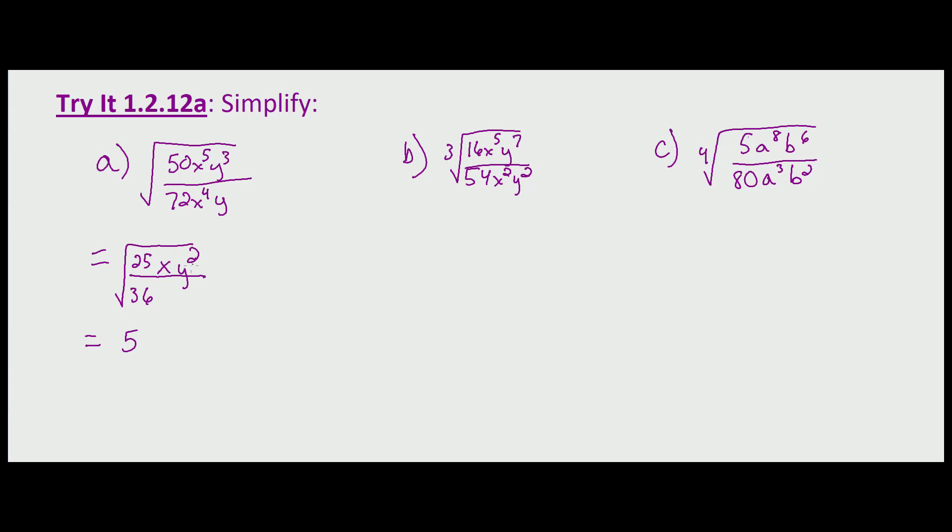The square root of 25 is 5, the square root of x is x, but we'll look at the y first since we're taking it out. The square root of y squared, we have to take the absolute value because the power we're left with is an odd power. So that's 5 times the absolute value of y times the square root of x, and that's all over the square root of 36, which is 6.